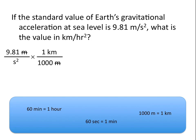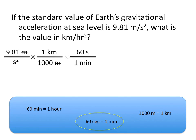Now we need to convert seconds squared to hours squared, and we'll look at how to convert a unit that's raised to a power. We know we'll need to use a conversion factor, and we can see that 60 seconds is equal to 1 minute. Because we want seconds on the top, minutes must go on the bottom. We now have seconds on the top and seconds squared on the bottom, which allows us to cancel out only one of the units of seconds on the bottom.